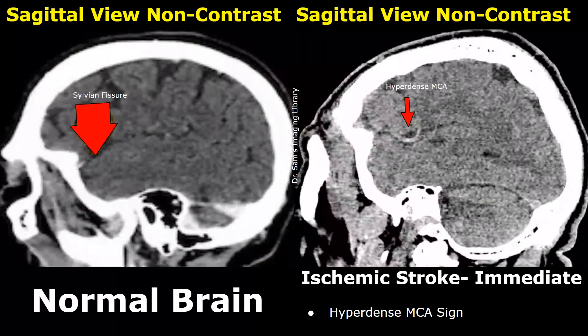These are sagittal views of the brain. Here we can see a hyperdense MCA. In immediate stroke, it is at the location of the sylvian fissure.